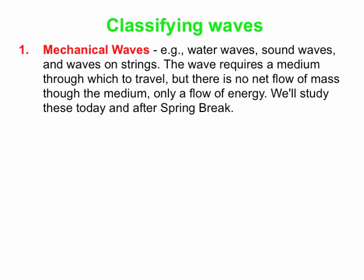There's a few different ways to classify waves, so let me start with one classification scheme. We can classify waves into three categories. The first one being mechanical waves. These are waves that require a medium through which to travel. Good examples are water waves, sound waves, waves on strings. The wave itself travels through the medium, so energy flows through the medium, but there's no net flow of mass. These are the waves we're going to start studying now and after spring break.